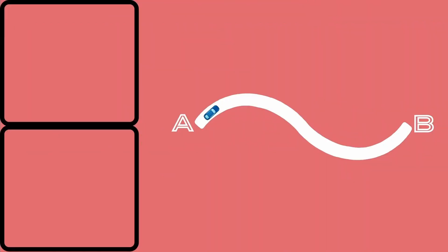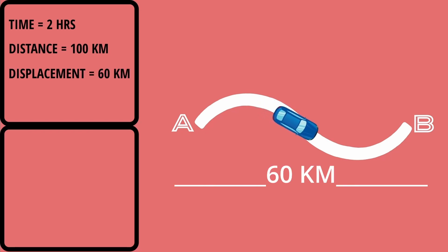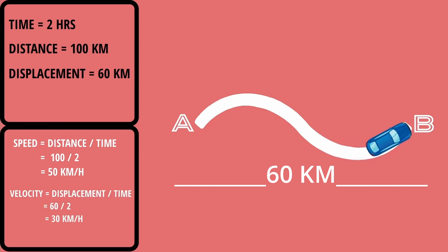For example, the car will go on this path for two hours. The distance the car travels in space is 100 kilometers. But the displacement of the car is only 60 kilometers. We can say that the speed of the car is 50 kilometers per hour, and the velocity is 30 kilometers per hour.